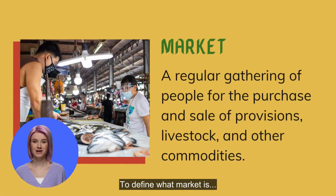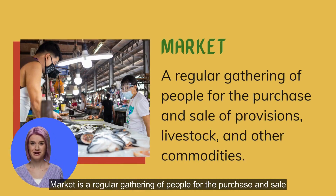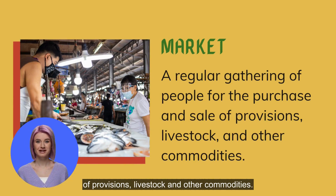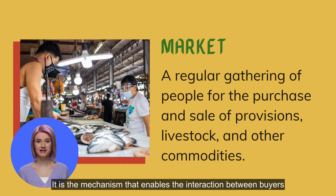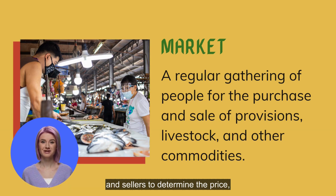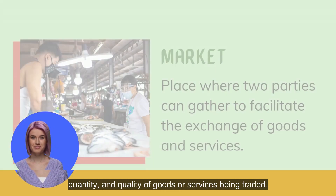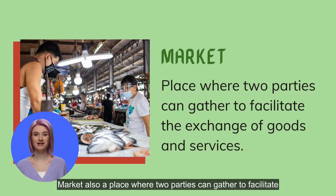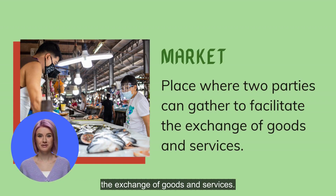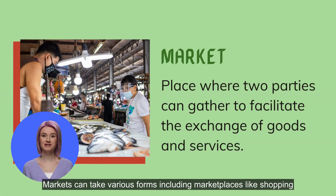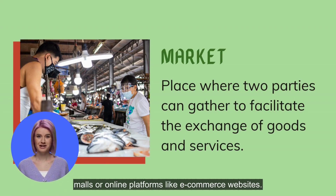To define what market is: a market is a regular gathering of people for the purchase and sale of provisions, livestock, and other commodities. It is the mechanism that enables the interaction between buyers and sellers to determine the price, quantity, and quality of goods or services being traded. Market is also a place where two parties can gather to facilitate the exchange of goods and services.